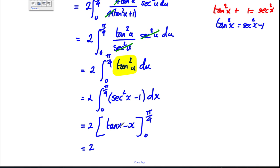Keep the two there. Substitute in π by four and you get one, subtract π by four. Substitute in zero and you get zero.